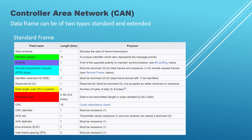Seventh, Cyclic Redundancy Check, CRC: this is a checksum used to verify the integrity of the message data. The CRC is calculated based on the identifier, control field, data length code, and data field. The standard frame format is used in both CAN 2.0a and CAN 2.0b, which are the two most common versions of the CAN protocol. The main difference between the two versions is that CAN 2.0b allows for longer identifiers — 29 bits — and adds some additional error detection and fault confinement mechanisms.